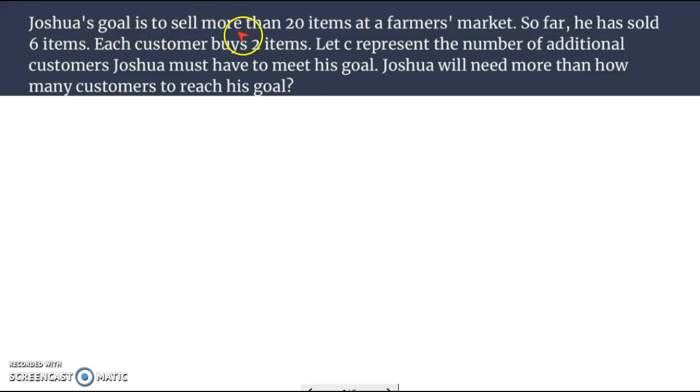The problem says Joshua's goal is to sell more than 20 items at a farmer's market. So far he has sold 6 items. Each customer buys 2 items. Let's see, C represents the number of additional customers Josh must have to meet his goal. Josh will need more than how many customers to reach his goal? Okay. More than 20. We see the phrase more than 20.